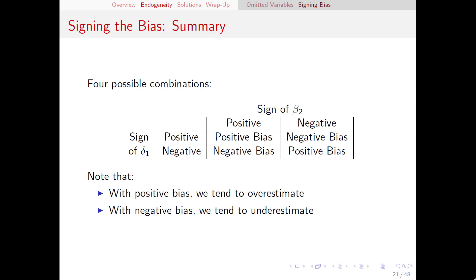This is just one example of the sign that we will get for the bias. Depending on the signs of delta1 and beta2 — the relationship between the explanatory variable and the omitted variable, and then the relationship between the omitted variable and the dependent variable — we can get four combinations. Both positive gives us positive bias. Both negative will also give us a positive bias. And if the signs are mixed — positive and negative, or negative and positive — we're going to end up with a negative bias. A negative bias means that on average we're going to underestimate the effect of our explanatory variable on the dependent variable.